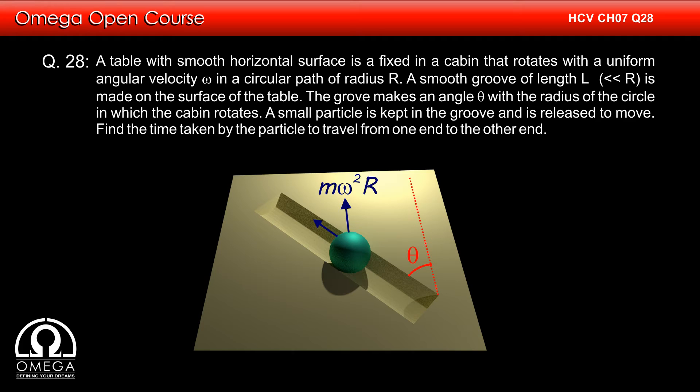If we resolve this centrifugal force in two components along the groove and perpendicular to it, the component of the centrifugal force along the groove is m omega square R cos theta. This component of the centrifugal force is responsible for the motion of the particle in the groove.